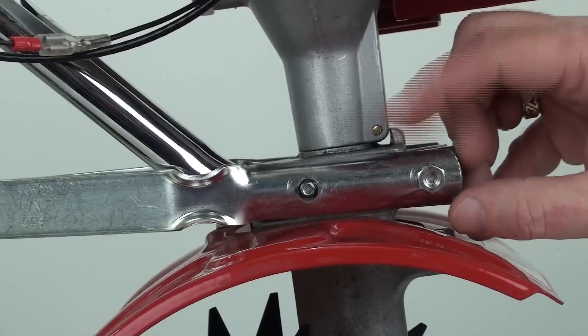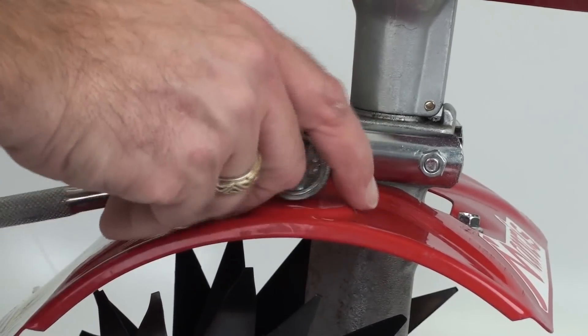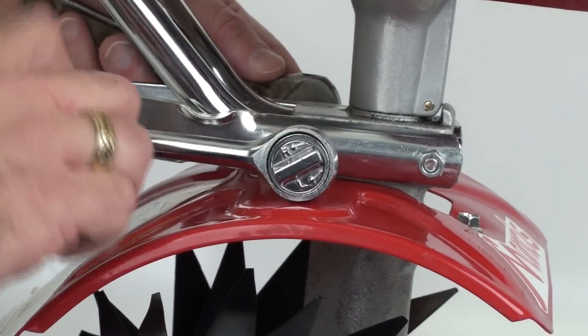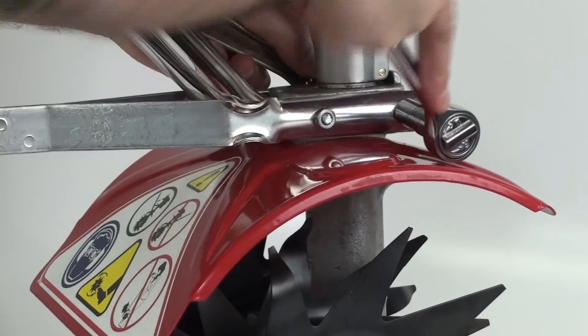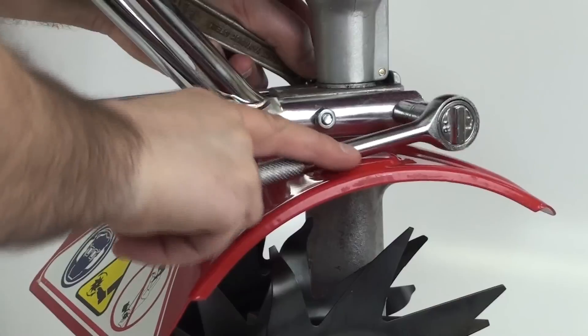Insert the nut and bolt, finger tighten to hold in place then tighten with the wrench. The bracket can be positioned with the bottom of the Y facing the rear or the front of the tiller depending if you would like to walk forward or backward while plowing. Ask for help if needed to hold up the handlebars.